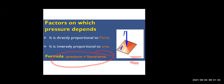So let's see the factors on which pressure depends. Pressure depends upon two factors. Firstly, pressure is directly proportional to force. More the force you apply, more will be the pressure. If you apply less force, less will be the pressure. So if you increase force, pressure will increase; if you decrease force, pressure will decrease. That is called directly proportional — if one is increasing, the other also increases, and if one is decreasing, the other also decreases.